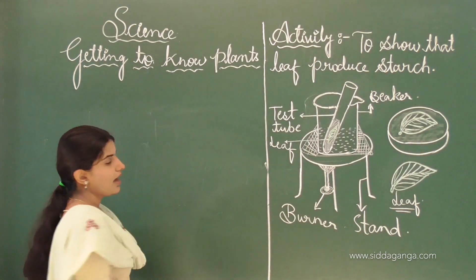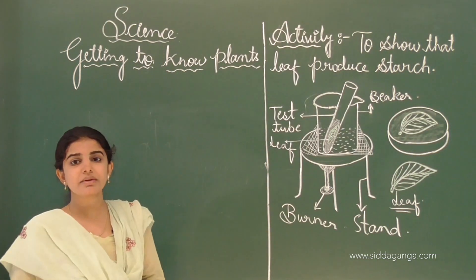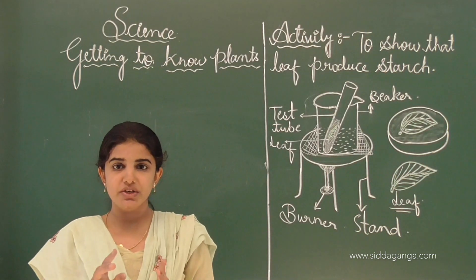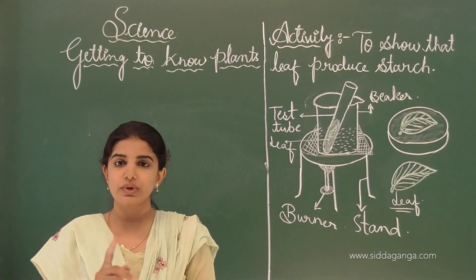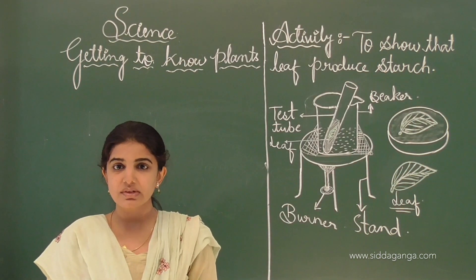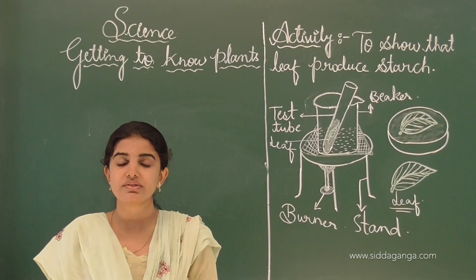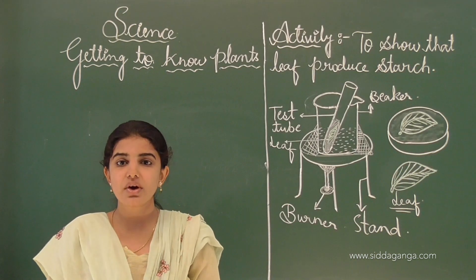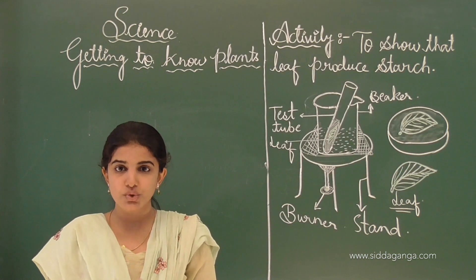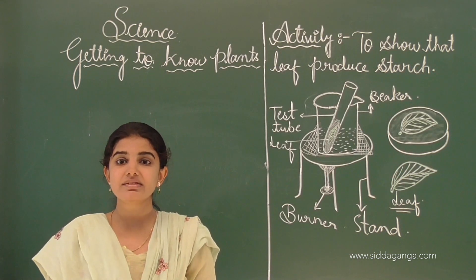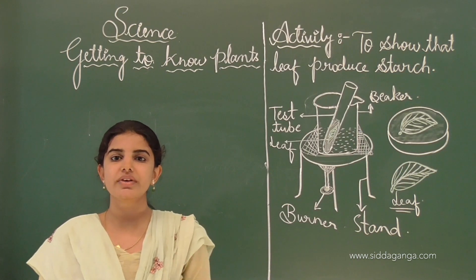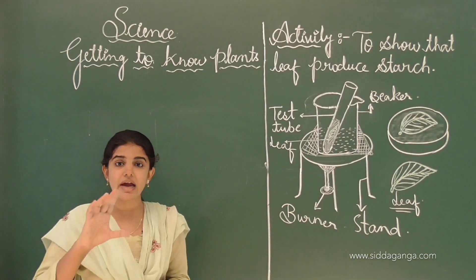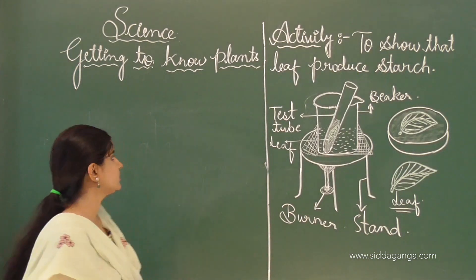A plant can be divided into two parts. One is the root system and another one is the shoot system. Based on the shoot system, plants can be categorized into different types on the basis of the height of the shoot.